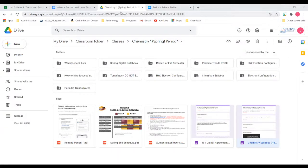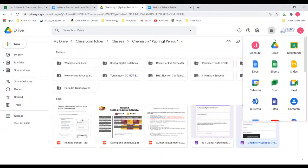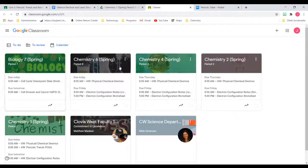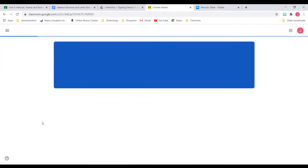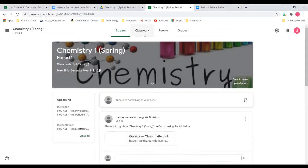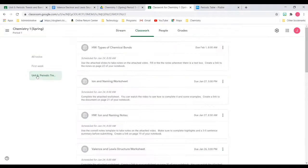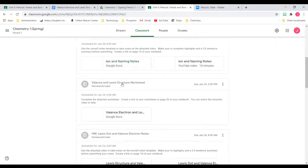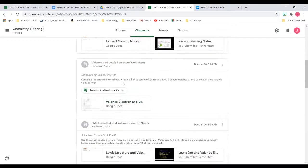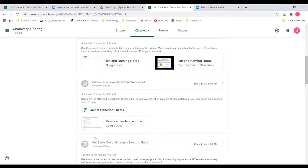If you haven't opened it already, you want to go ahead and go into classroom. I'm going to open up our classroom here and use period 1 as an example. Go to classwork, then click on unit 6 as the topic. You can scroll down and find your valence and Lewis structure worksheet.